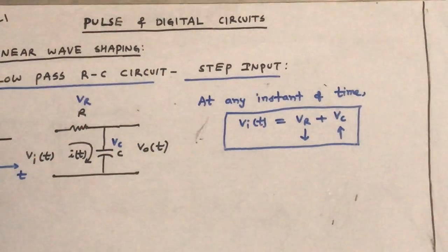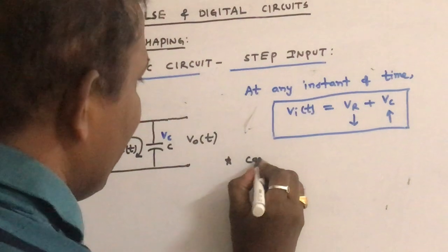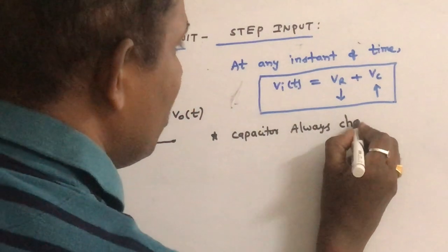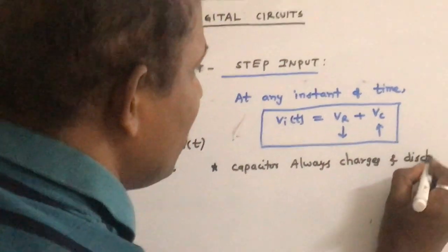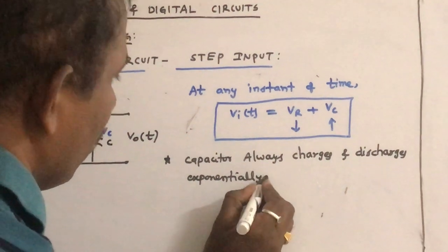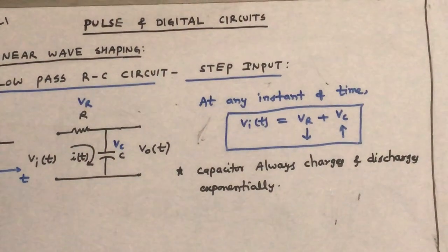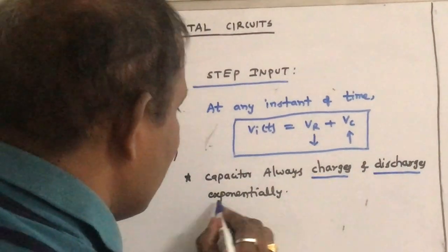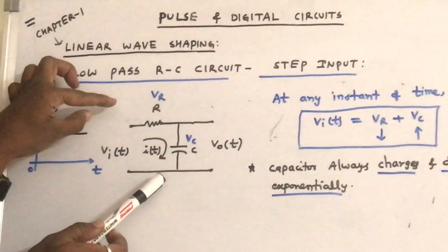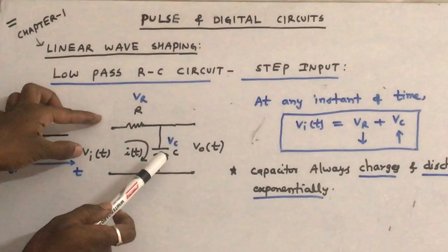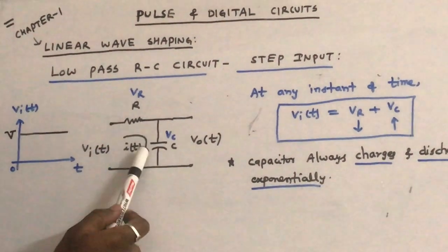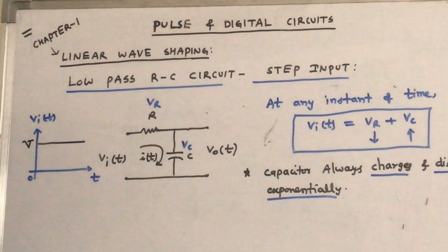The second very important point to remember is that the capacitor always charges and discharges exponentially. This is the very important point of this chapter. When you give a constant voltage to this circuit, initially the voltage across the capacitor is zero, so the capacitor starts charging exponentially towards the applied voltage V. That is the simple operation of this circuit.